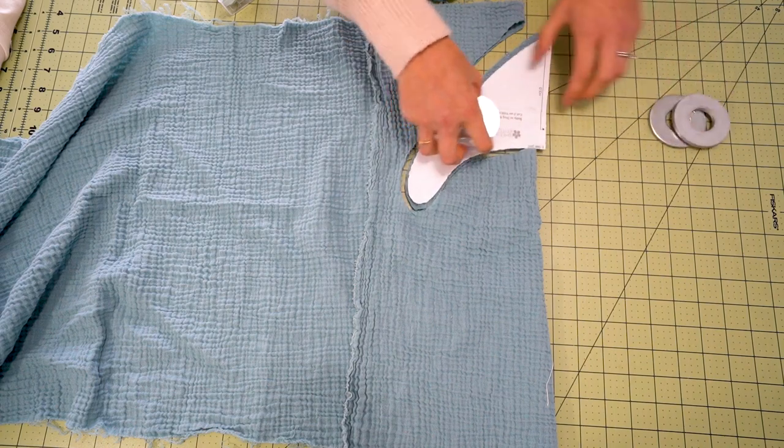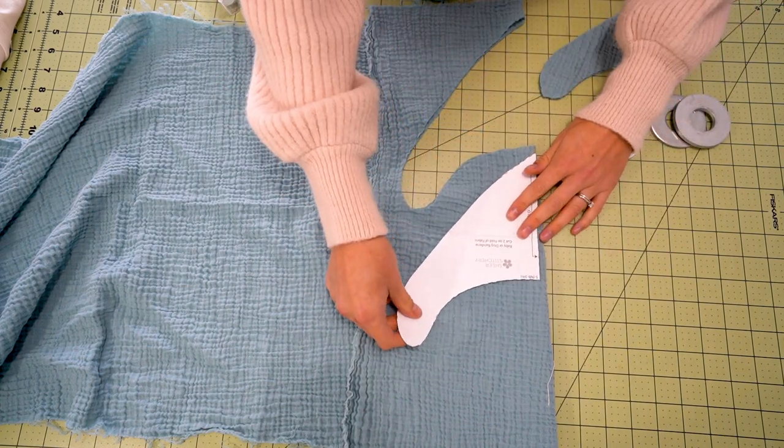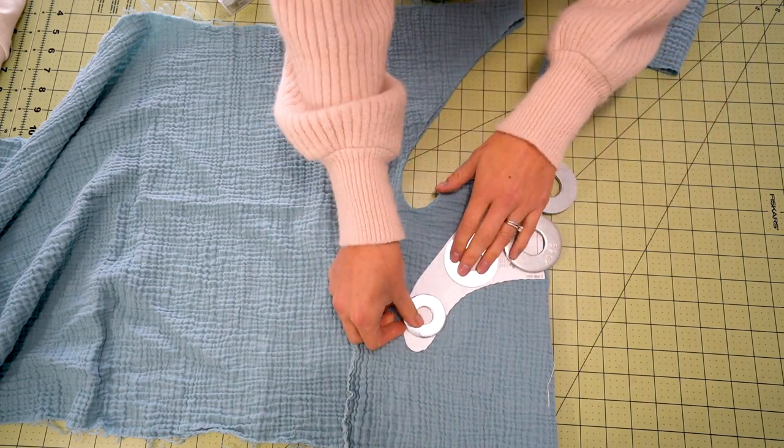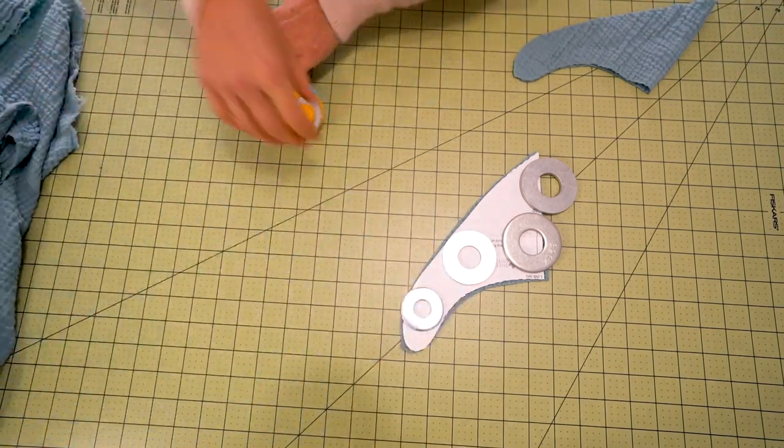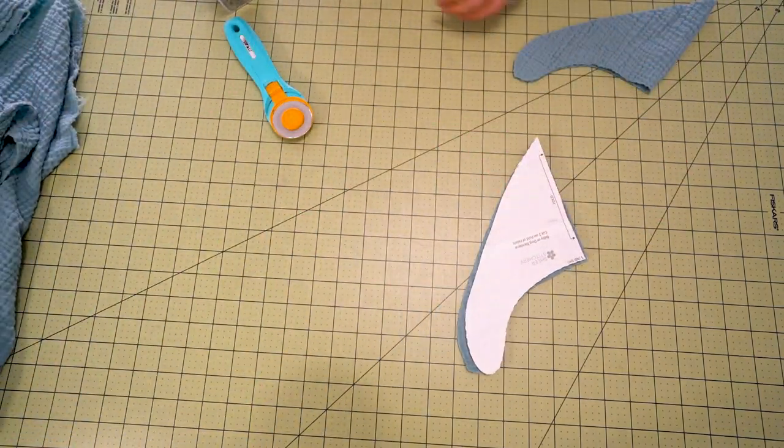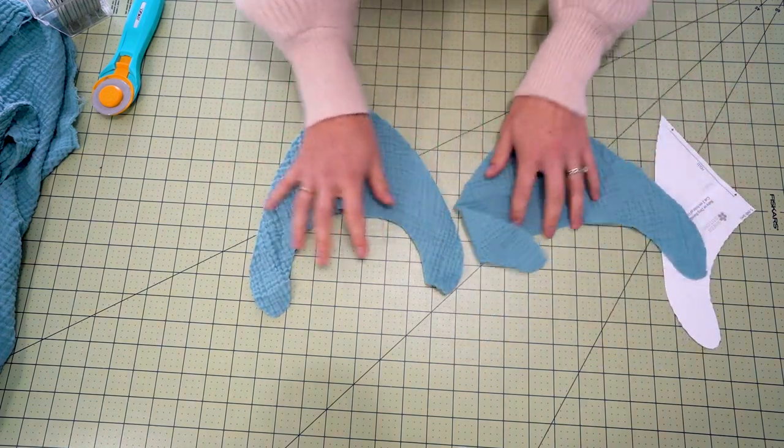I like to use a rotary cutter because it's a bit more precise than using your shears. Now if you are doing a double-sided bib that is going to be or bandana that is going to be a different color cut it out in a separate color. For this particular one I am making it a solid color with this blue here. So I am going to cut two pieces out a front and a back.